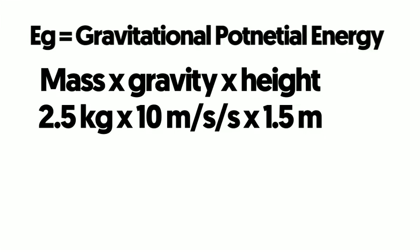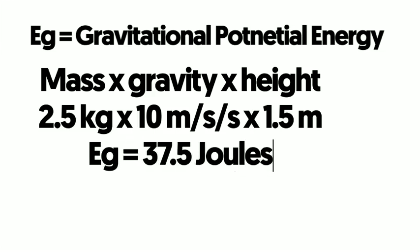So, if we calculate all those together, the gravitational potential energy is going to be 37.5 joules. So, the unit for energy is going to be joules. And that's how we calculate the gravitational potential energy of that book.